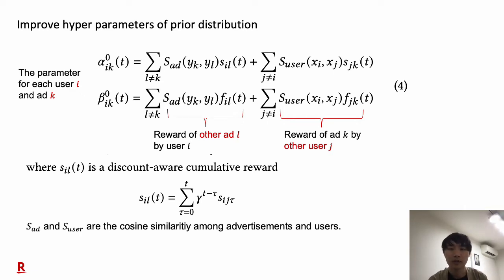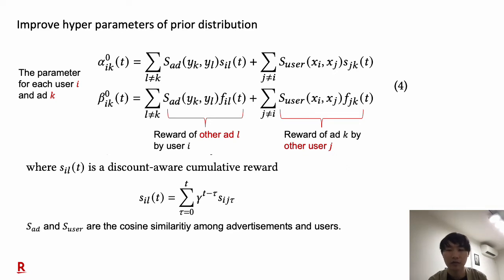The hyperparameters of the prior distribution will be initialized by Equation 4. Here we introduced discounting of rewards with hyperparameter gamma. The parameter for each user i and ad k is estimated from the reward of other ads by the target user and the reward of the target ad by other users, based on cosine similarity S. In Equation 4, alpha and beta are hyperparameters of the beta distribution, where alpha means the successful count of clicking an ad and beta means the non-successful count. The first term represents transferring rewards among ads by target users, and the second term represents transferring rewards among users by the target ad.